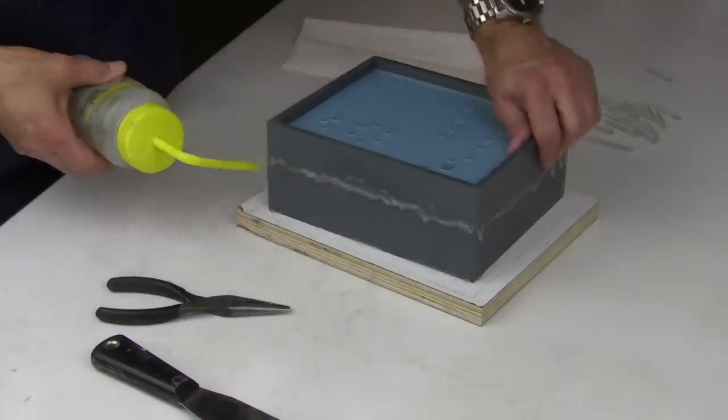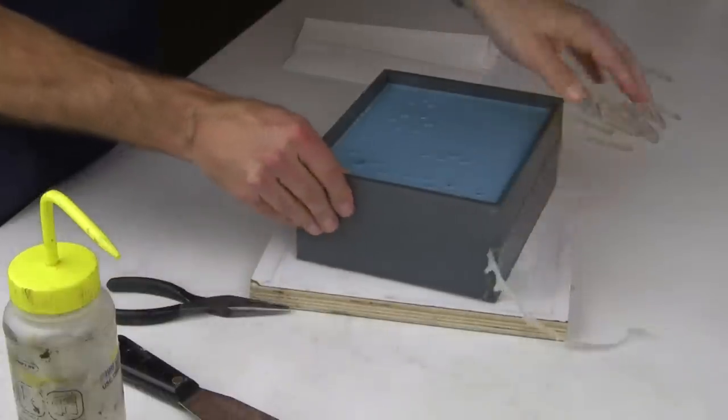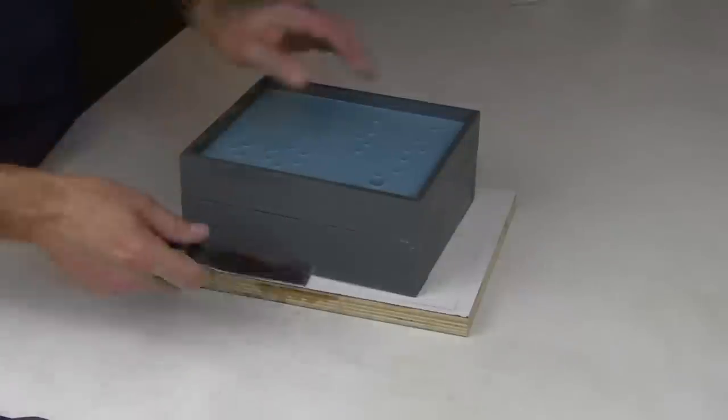Once again, we soak the hot glue with isopropyl alcohol and remove the bead of glue. The mold boxes are carefully pried apart around the perimeter.